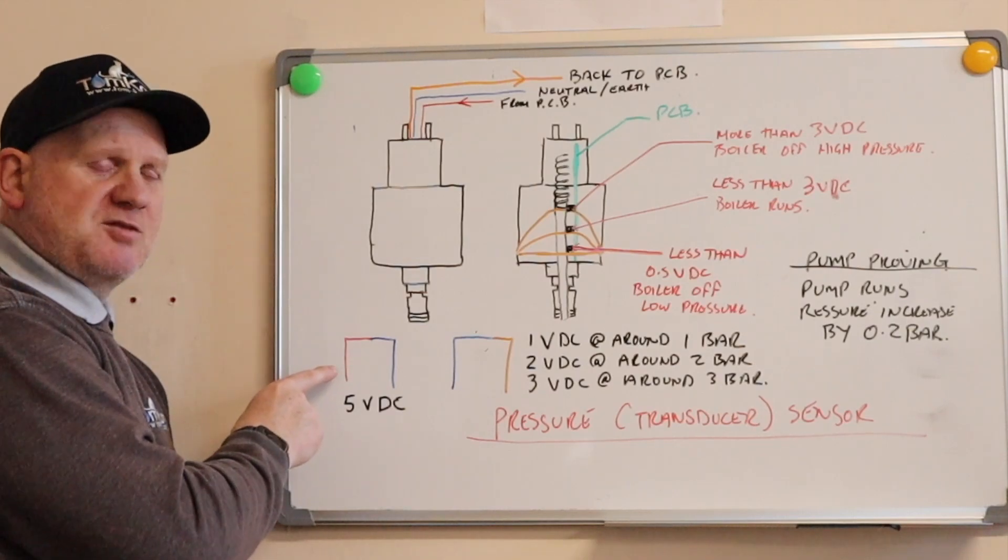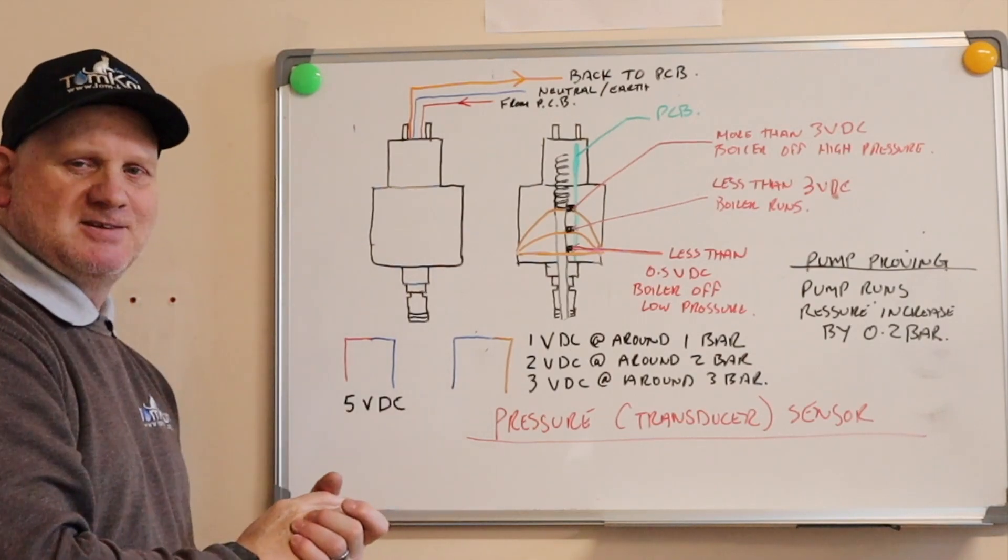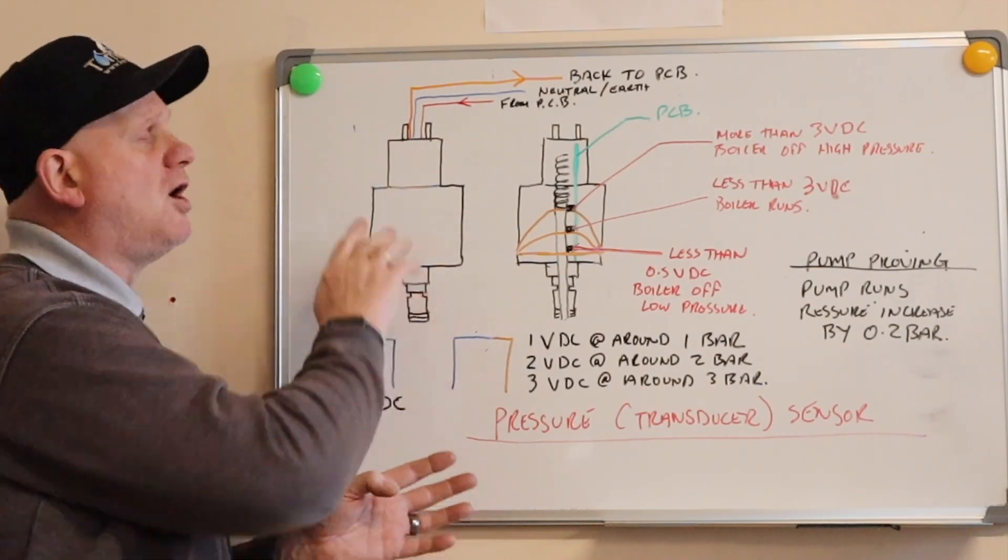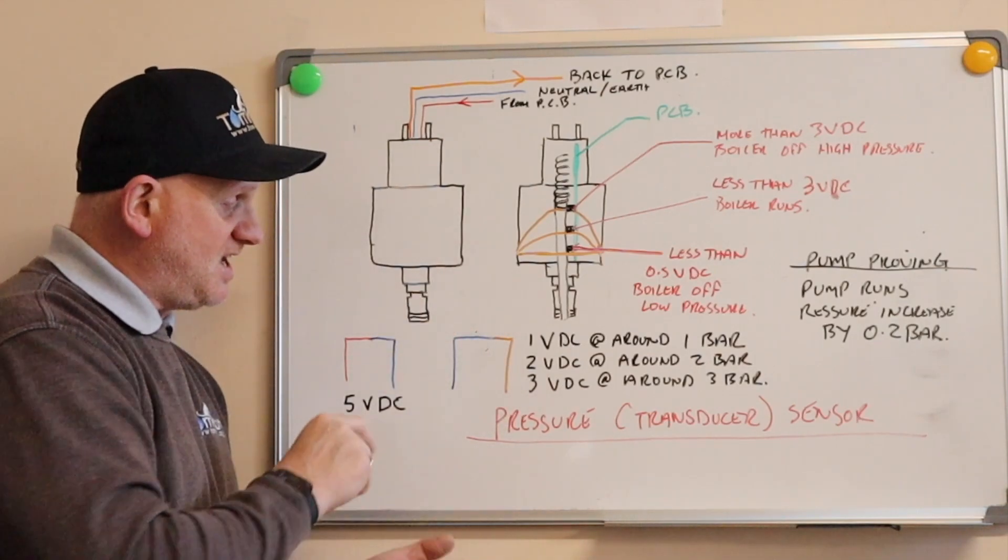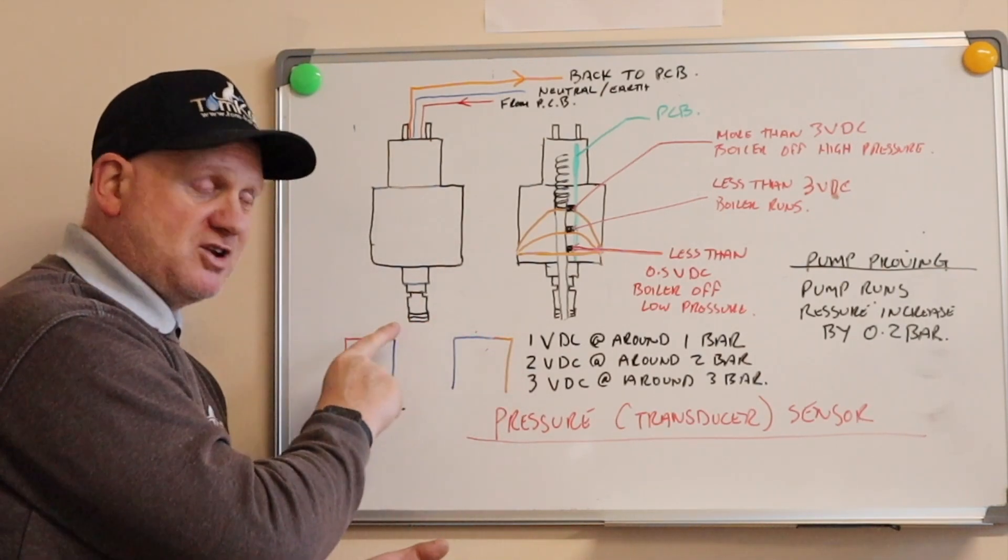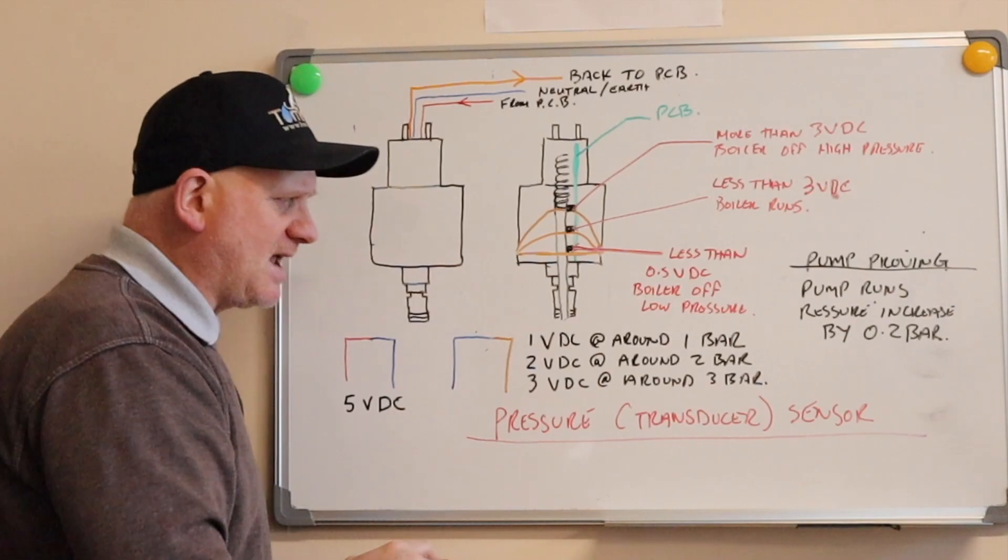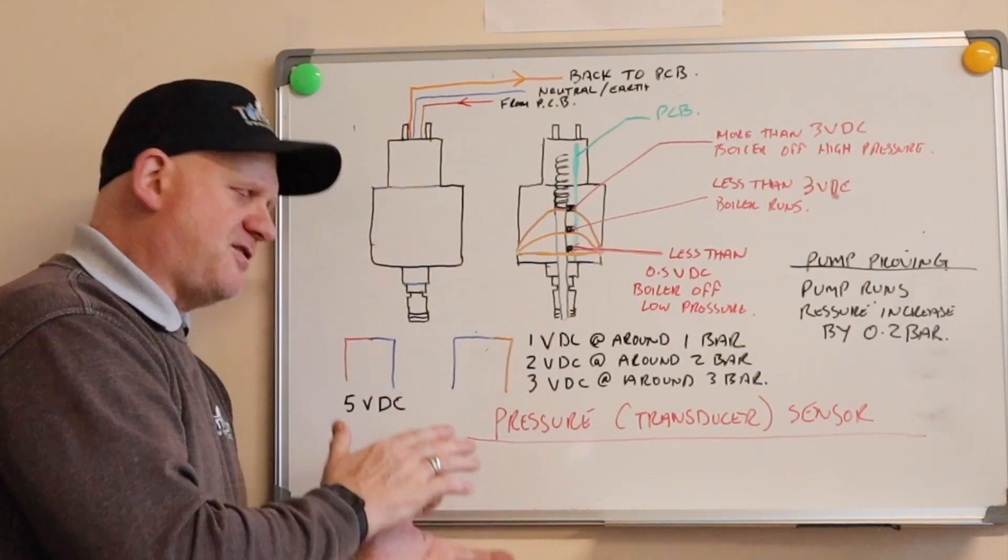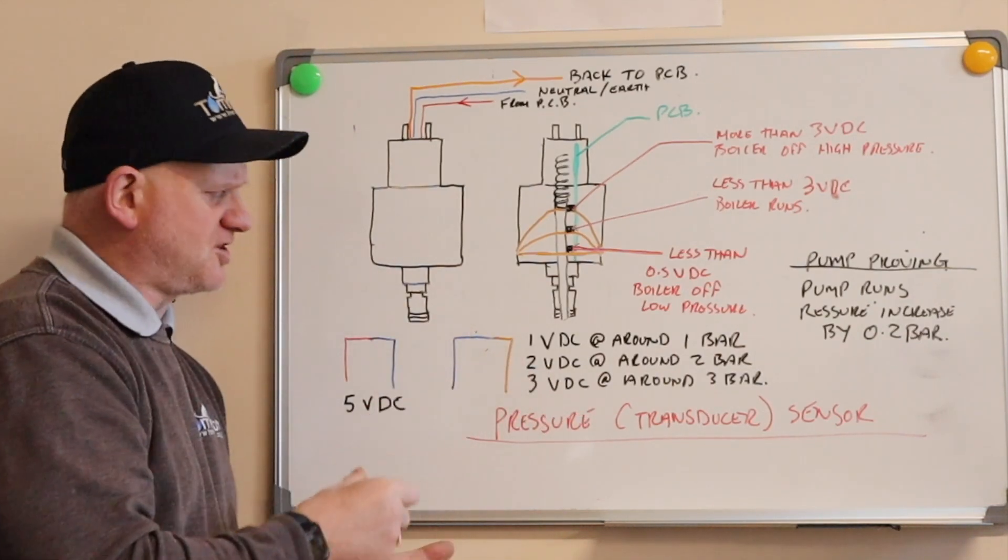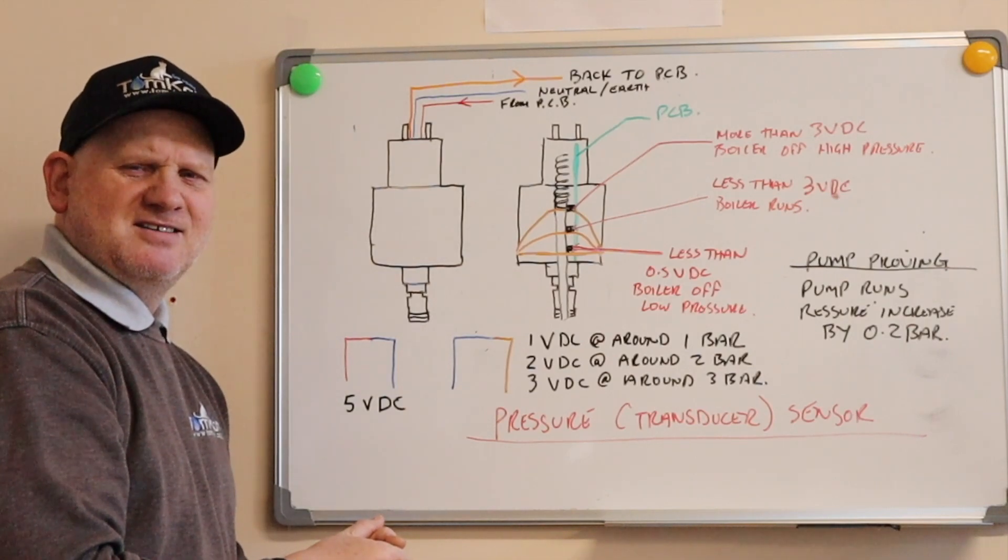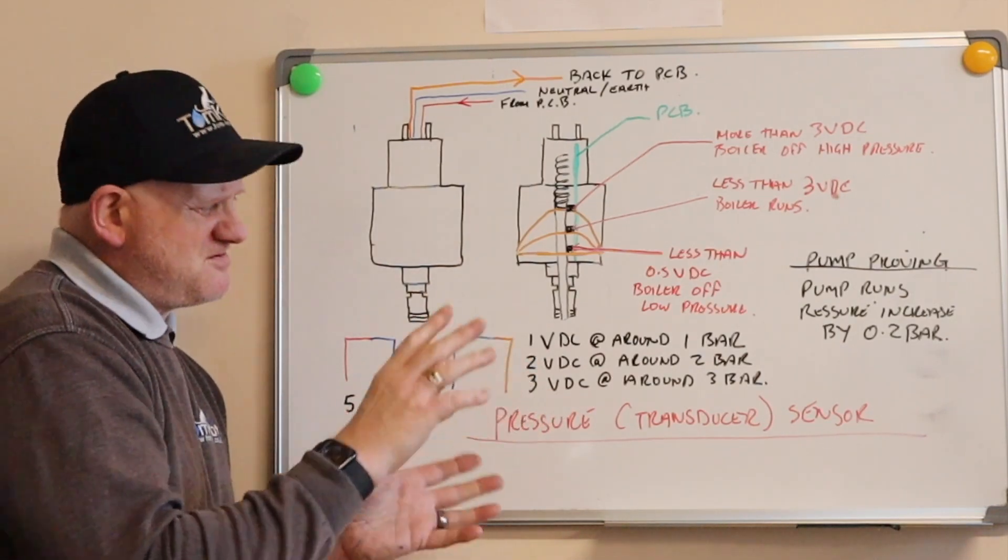If we checked between our red and blue wires we would get 5 volts DC. Depending on the pressure in the system will depend on what voltage DC we get back coming down the orange wire. If we had 1 volt DC coming back from the orange wire between the orange and blue, that would be around 1 bar. If we have 2 volts DC coming back, then it's around 2 bar. If we have 3 volts DC coming back, it would be around 3 bar. And if it got 5 volts DC coming back, then it's knackered. But that's a rough estimate and it's slightly different for different boilers.